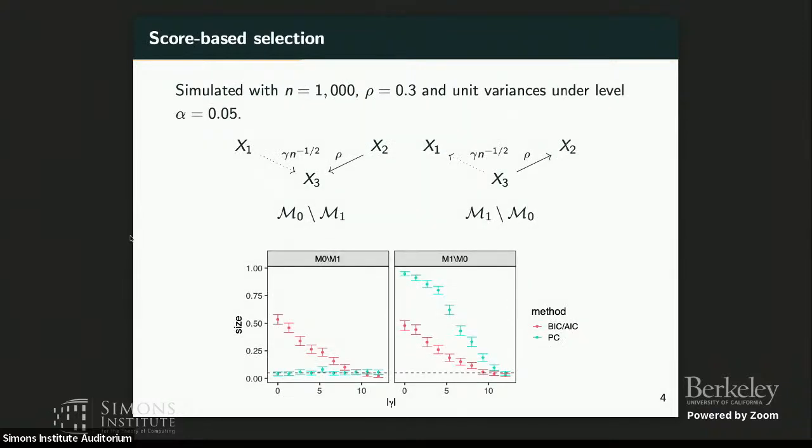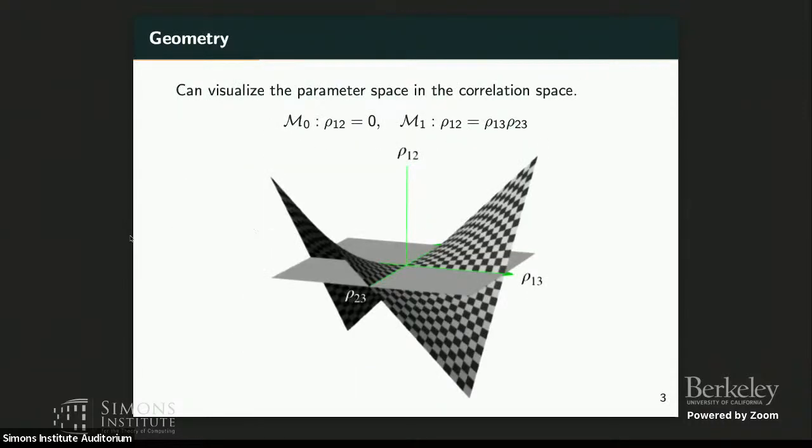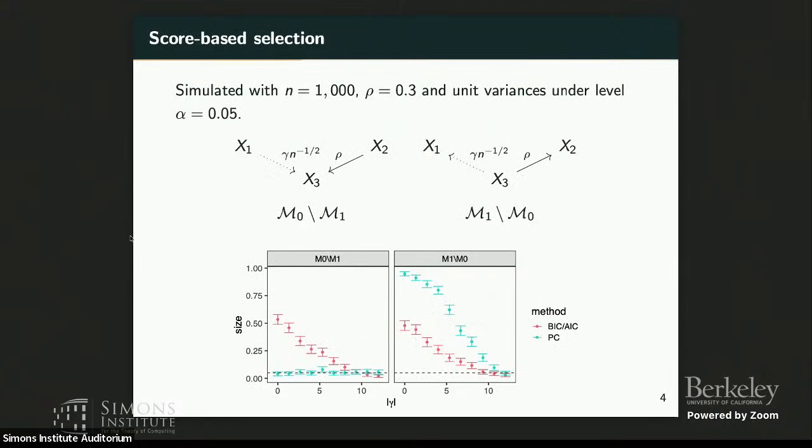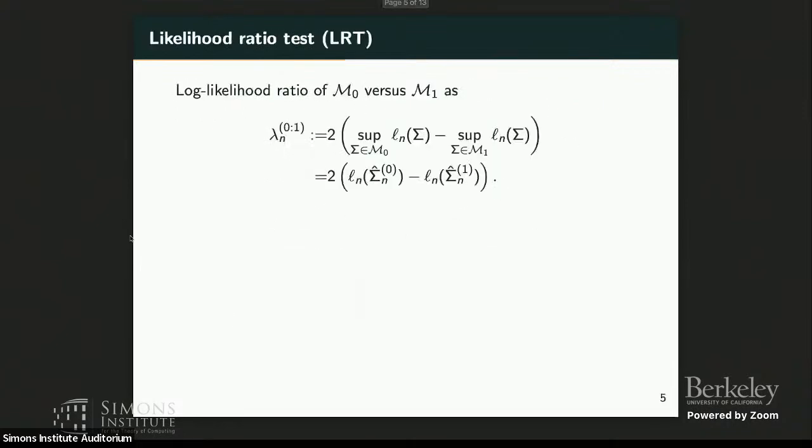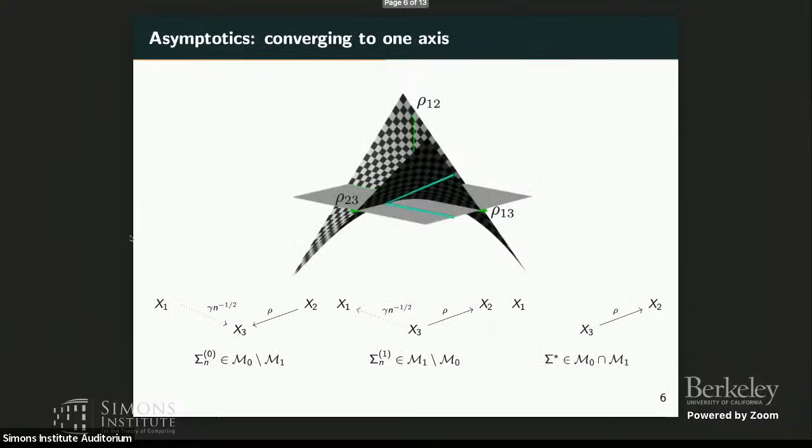So basically, if you just do a score-based approach, you just take the one with a higher BIC. Then when you're close to one of the axes, you basically, you're as good as flipping a coin randomly. So we can look at the model a little bit carefully, sort of like a likelihood ratio test. Basically, there are two different regimes that make it hard to differentiate between the two.